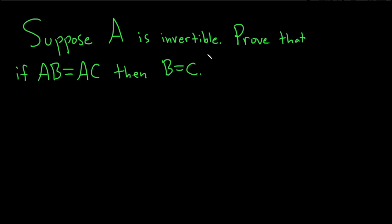Suppose that A is an invertible matrix and we're going to prove that if AB is equal to AC, then B is equal to C.